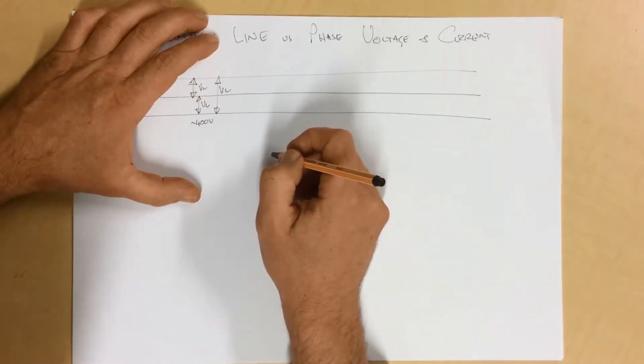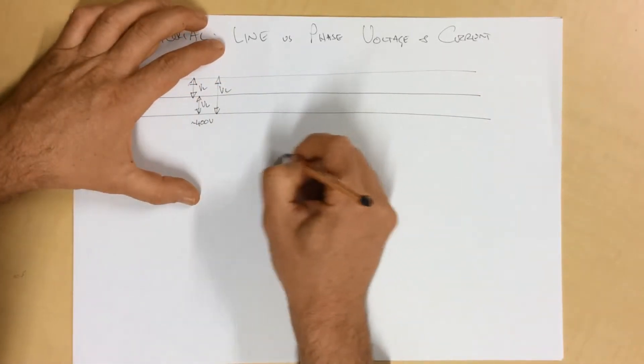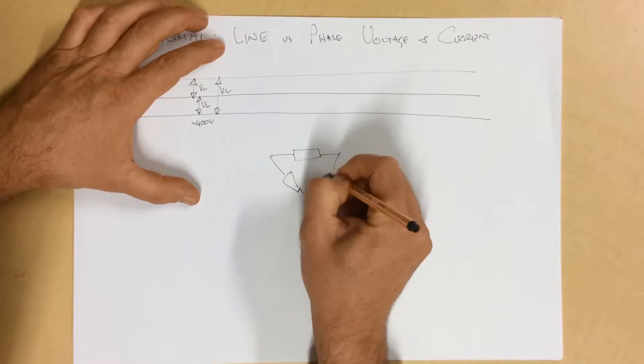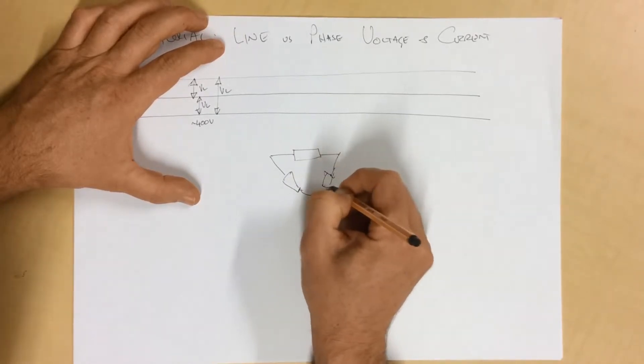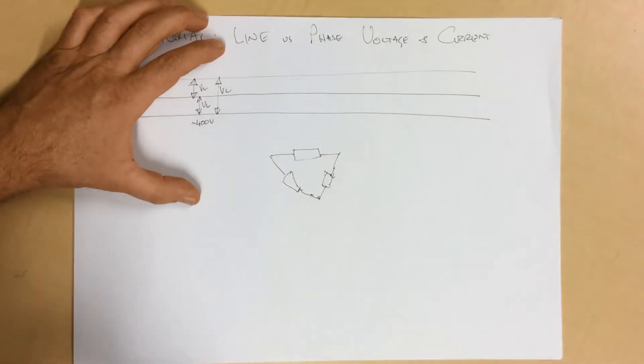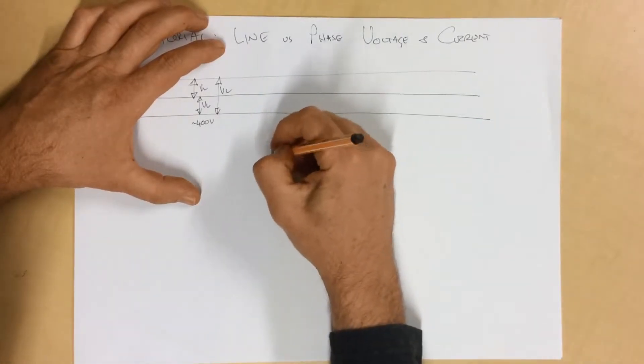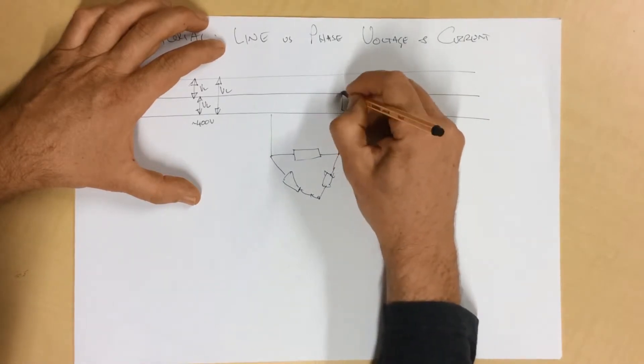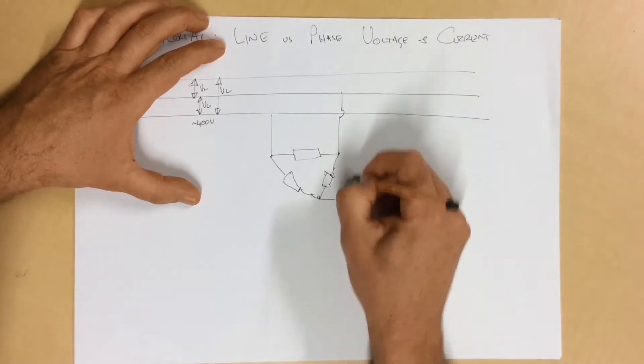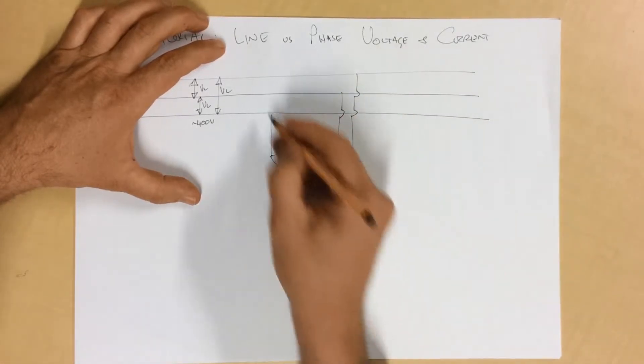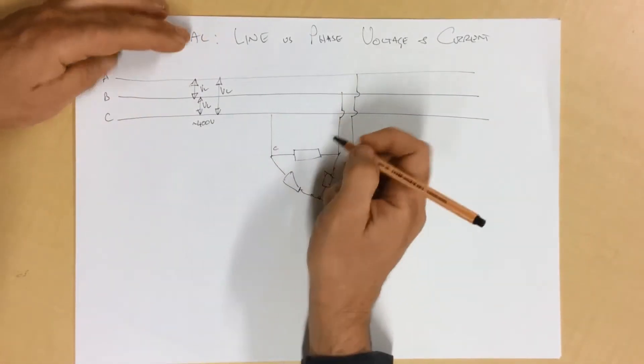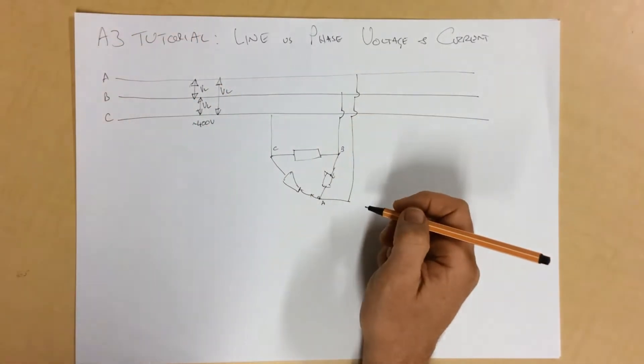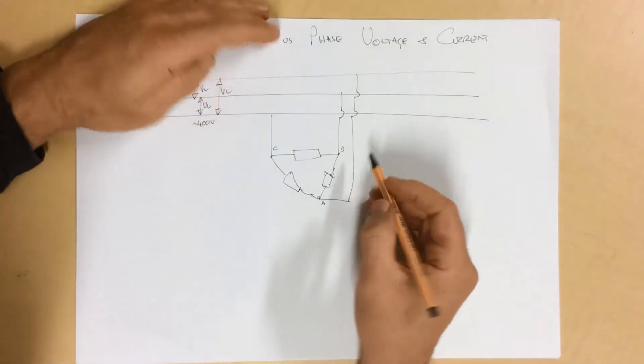So, if we draw a delta system down here, and we can connect this delta system up. So, there's one point connected there, another one there, another one there, and another one here. So, the voltage here would be C, this one here is B, and this one here is A.